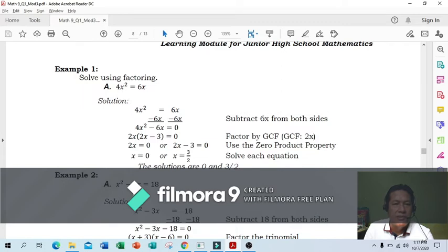Sample number one: Solve using factoring, 4x squared equals 6x. Remove the 6x, subtract 6x from the right side, subtract from the left side too. 4x squared minus 6x, 6x minus 6x is 0. Factor 4x squared minus 6x. Common factors: 2 times 2 times 3. Factor out 2x. x remains here, x here.